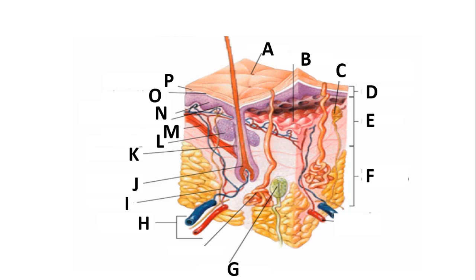This next part we are focused on labeling all the parts of the skin. As you prepare for gross anatomy and histology, make sure you know how to identify and label these parts. A is the sweat pore where sweat leaves, B is the dermal papillae, and C is the Meissner's corpuscle, which is responsible for sensing light touch.